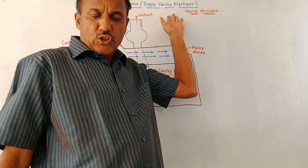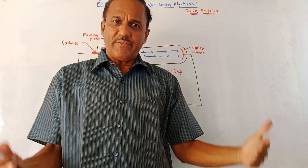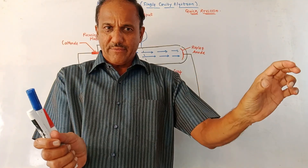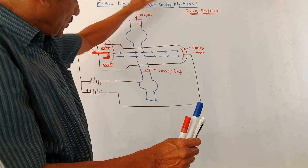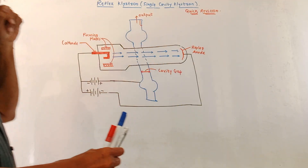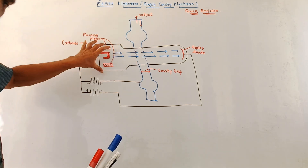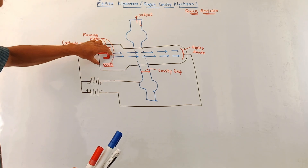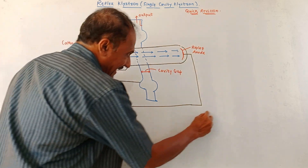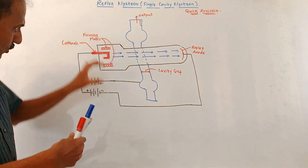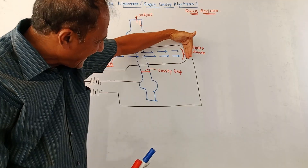The next is the single-cavity Klystron, also called the reflex Klystron. The basic principle of working remains the same as the two-cavity Klystron. The only difference is that in the two-cavity Klystron, two separate input and output cavities are used, whereas in the reflex Klystron only a single cavity is used. Similar to the two-cavity Klystron, the cathode produces the electron beam. Focusing plates are used for focusing the electron beam. There is a repeller anode — the negative terminal of the power supply is connected to this anode, so whenever the electron beam travels through this space and reaches the repeller anode, the electrons are reflected back.